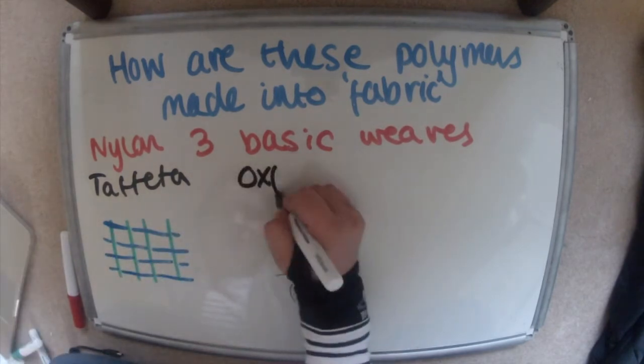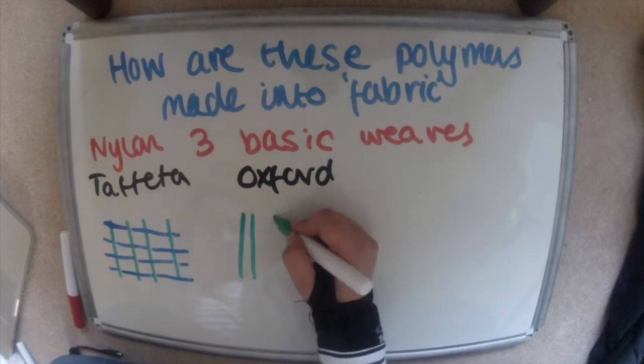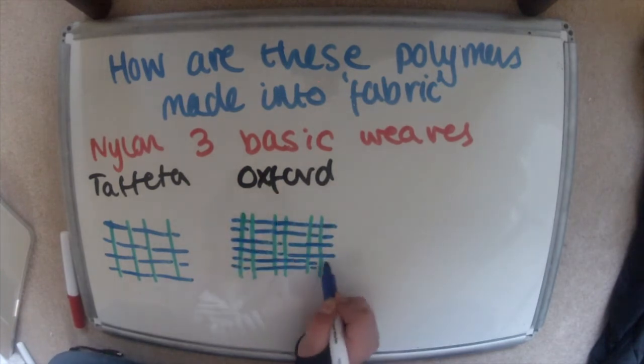The next one is the Oxford weave. And this is when you have two strands together but it's still under, over, under, over, under, over, but with two strands instead of one.